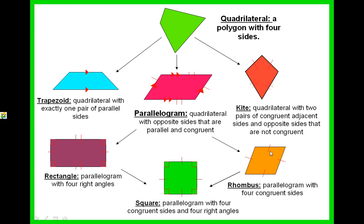A rhombus is a parallelogram with four congruent sides. A parallelogram doesn't always have to be a rhombus, but a rhombus is always a parallelogram.